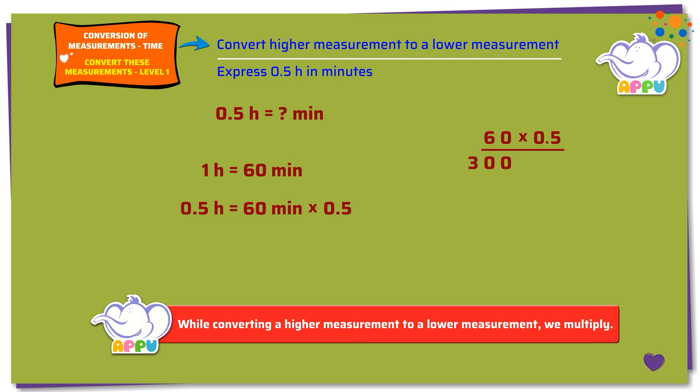Then, count the digits after the decimal point. Here, it is 1. We place the decimal point after one digit counting from the right. The answer is 30, which is the same as 30.